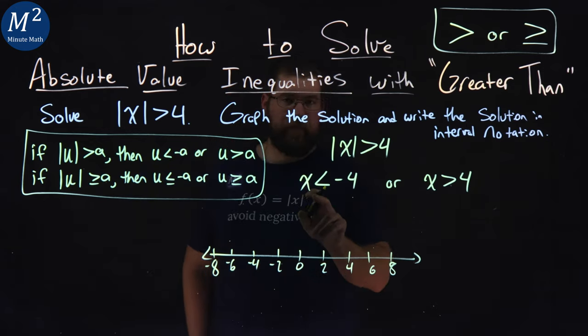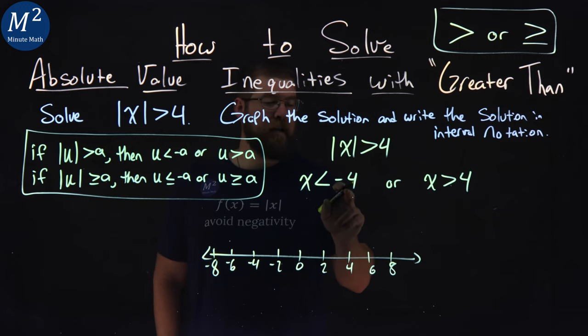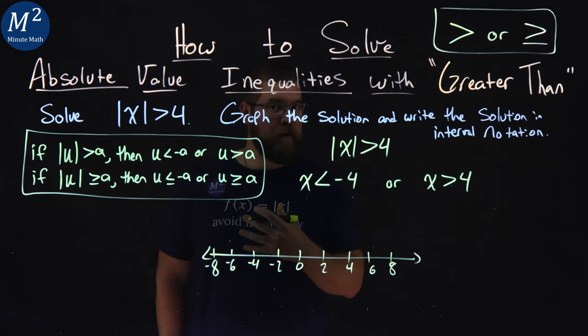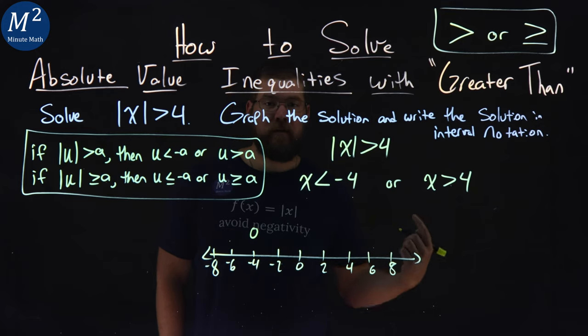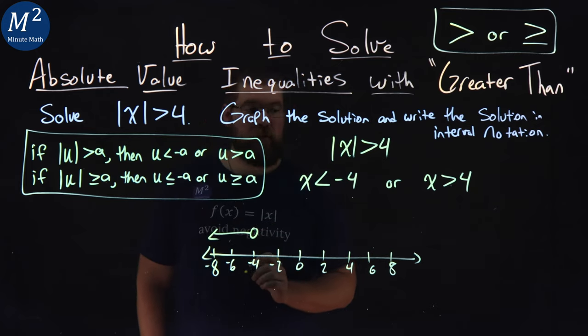Let's look at the first one here. x is less than negative 4. It cannot equal negative 4, it's just less than, so we have an open circle here. x is less than, so we put the arrow to the left.